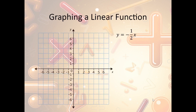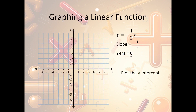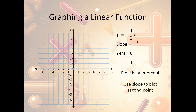Now, how do I graph a linear function? First, I need to pick out my slope and my y-intercept. In this case, my slope is negative one-half because that's attached to the x. My y-intercept — notice there's nothing here, no lonely people, so in math terms that's zero. So my y-intercept is zero. When I graph this, the first step is to plot the y-intercept. My y-intercept is zero, so I go along my y-axis and find zero, which is right here, and I plot my point. The next step is to use the slope to plot my second point.